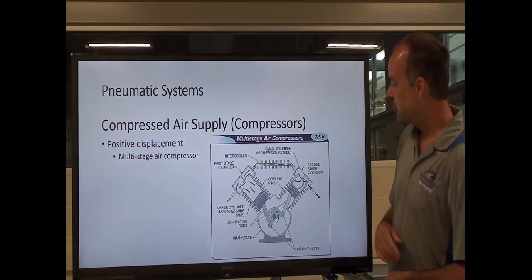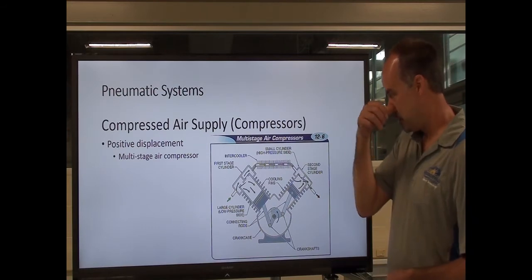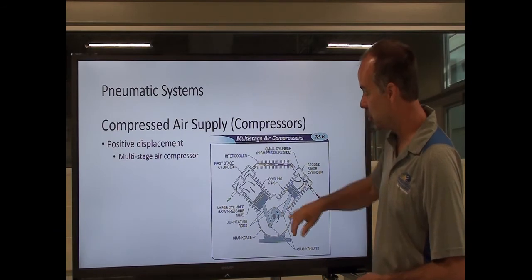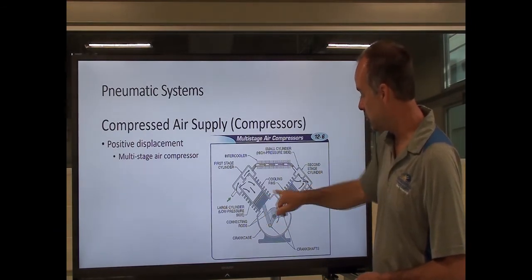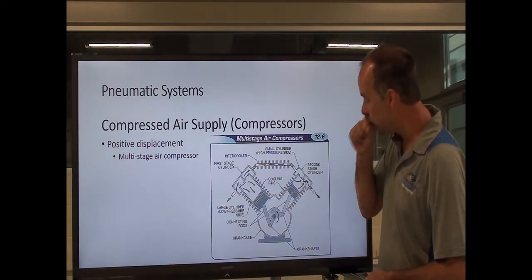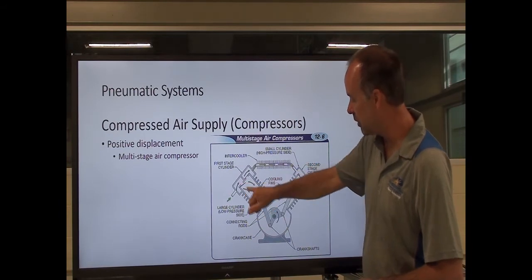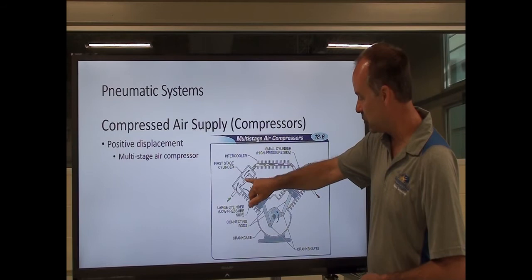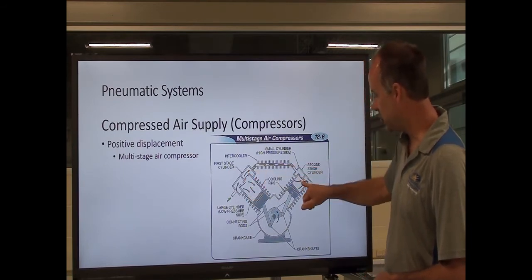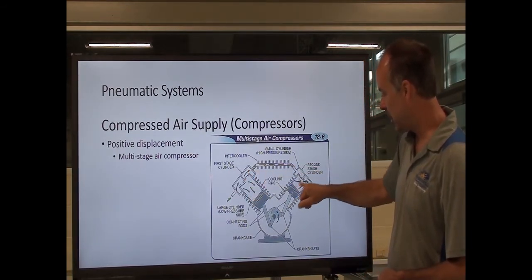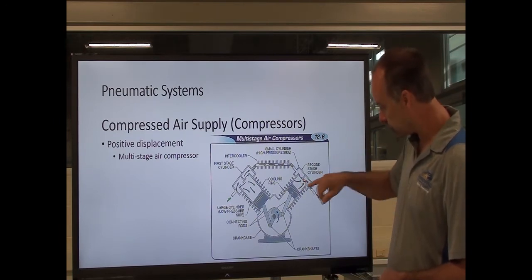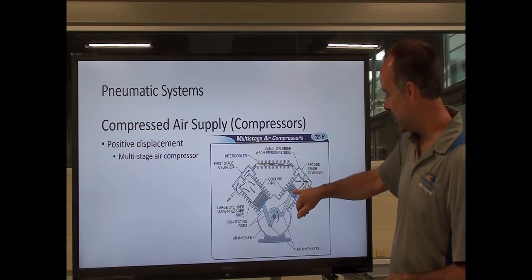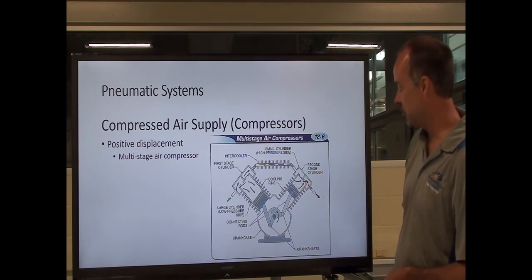Multi-stage air compressors are used in systems where you want to generate a lot of pressure. The way a multi-stage works is with multiple pistons: the first piston draws air in and compresses it, but the outlet of this first stage doesn't go to the receiver — it goes to another piston, which multiplies the air pressure. It pulls the air in at an already compressed state, then compresses it more and sends it out to the receiver.